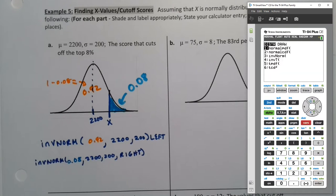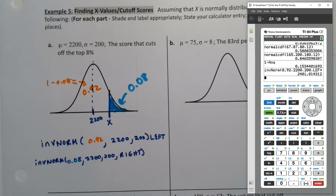So let me go to second distribution, number three. So I can say 0.92, 2200, 200, make sure you put those values in. Do not leave them a zero and one, right? This should be whatever it is for your problem. And I'll say left, enter, and I get 2,481.